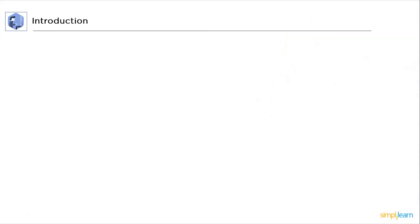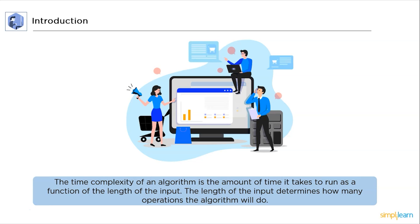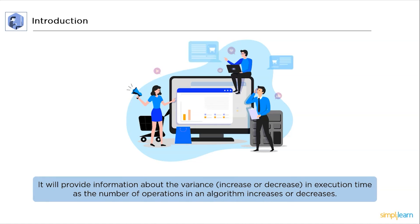The time complexity of an algorithm is the amount of time it takes to run as a function of the length of that input. The length of the input determines how many operations the algorithm will do. It provides information about the variance — increase or decrease — in execution time as the number of operations in an algorithm increases or decreases.